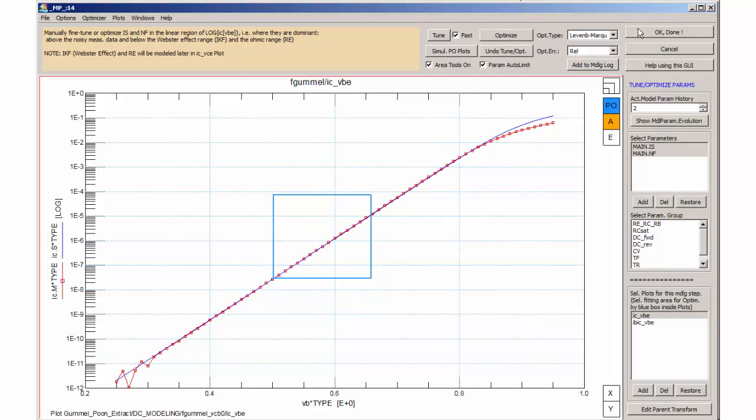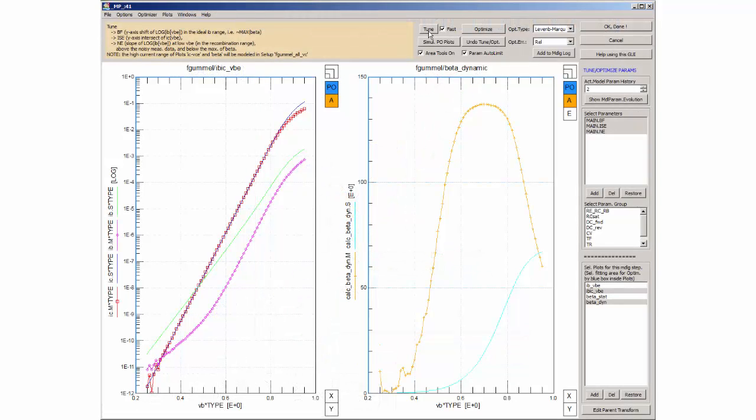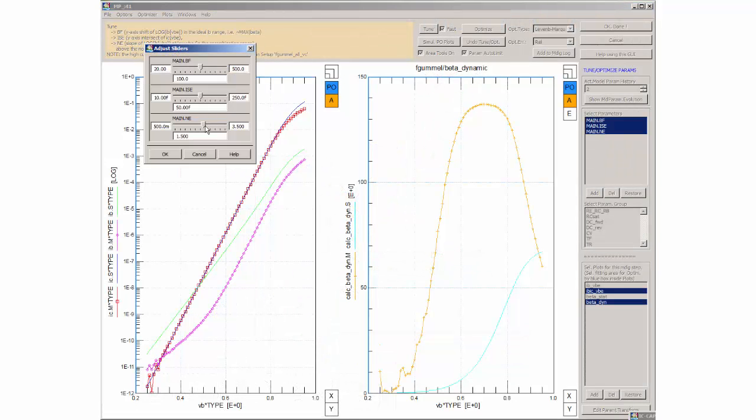The next step is the Gummel plot of the base current. Here it is, with the log of base current versus base emitter voltage, the green curve. The low bias range, the so-called recombination range, is modeled by parameters ISE for the y-intercept and NE for the slope, while the ideal base current range is a fraction of the collector current modeled by parameter BF. In our modeling project, I first fit the recombination range with ISE and NE and then the range of the ideal base current and parameter BF. As before, the high current range will be fitted later.